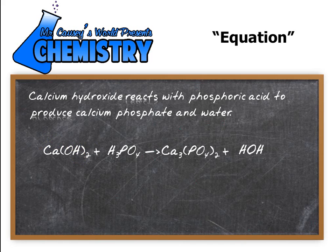Now what you have to remember here: in order to write a good equation, you have to know how to write formulas — ionic and covalent formulas. If you're not sure how to do that, go back to my YouTube channel, find the lessons on nomenclature, and go through them. You've got to get this down.